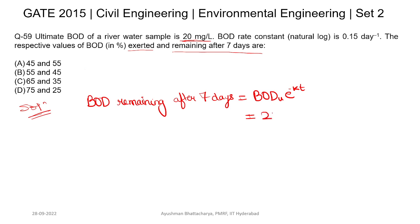The ultimate BOD given in the question is 20 mg/L, the rate constant is 0.15, and since they asked for seven days, we substitute: 20 × e^(-0.15×7).